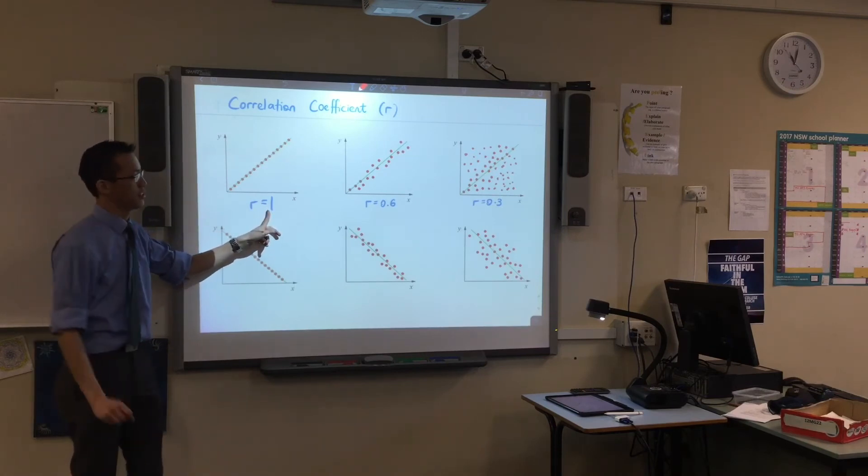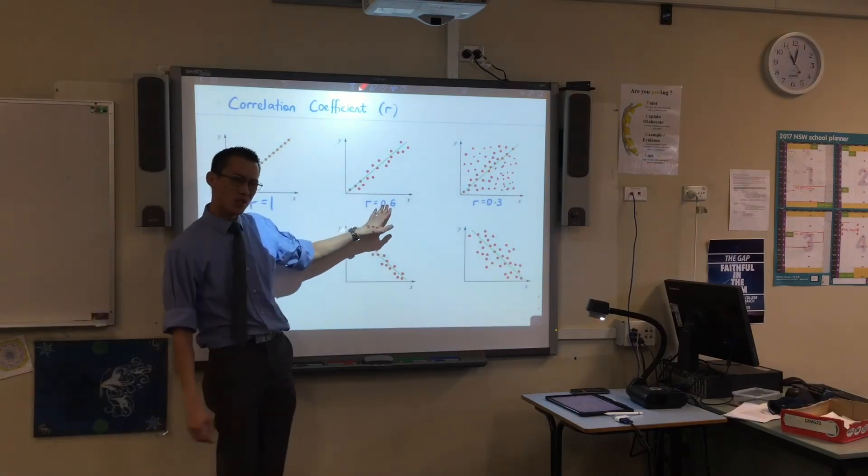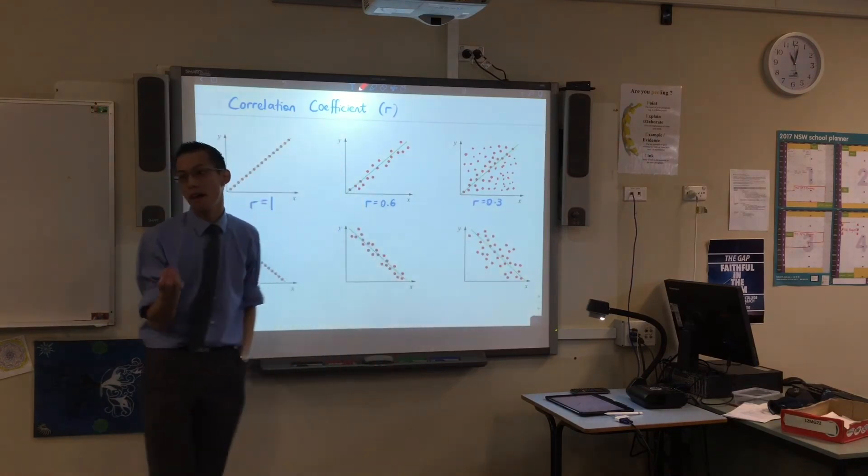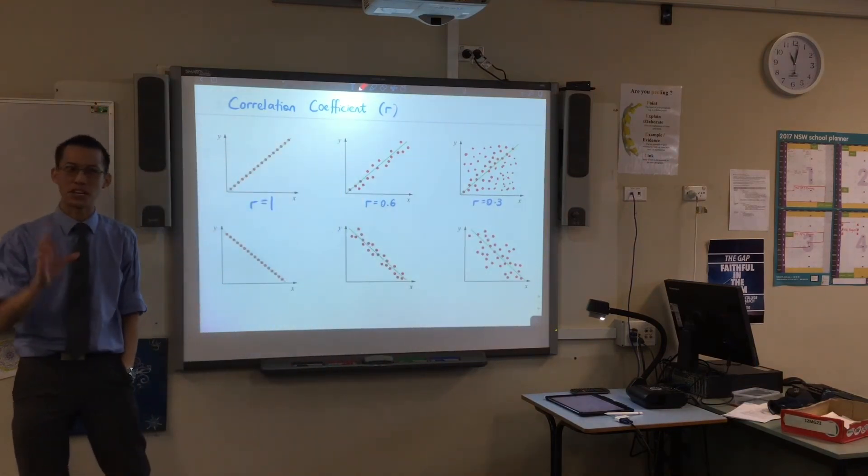So, r equals 1. Perfect correlation. Loose correlation. Looser correlation. But we can express these numerically so that we're not reliant on subjective language.